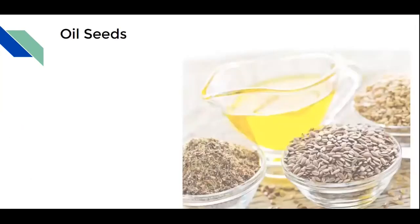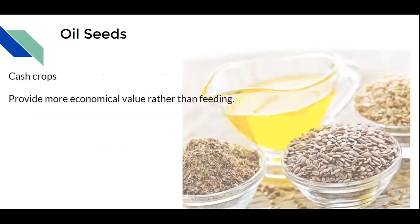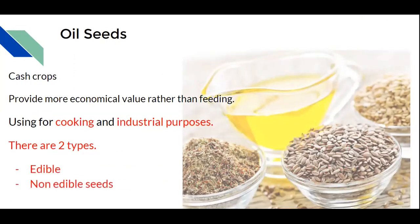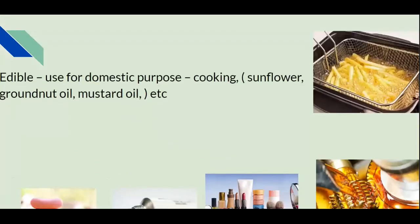Now we are going to talk about the next food crops other than grains — that is oil seeds. Oil seeds are considered cash crops because they provide more economic value rather than just food. They are used for cooking as well as industrial purposes. There are two types: edible and non-edible seeds.